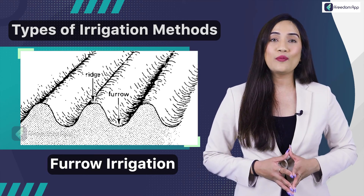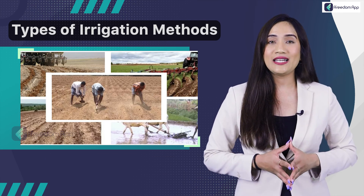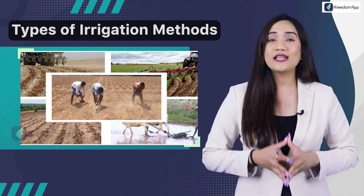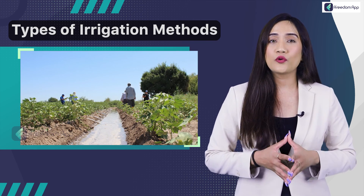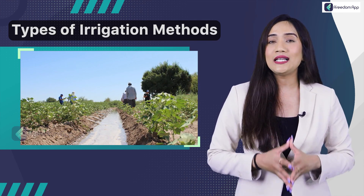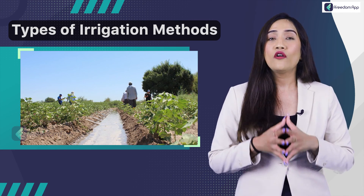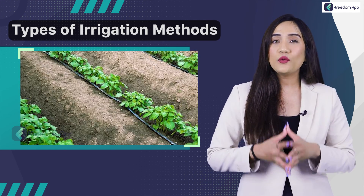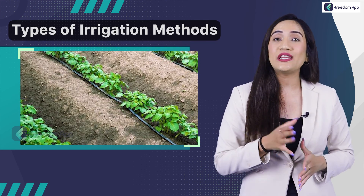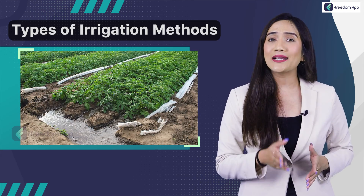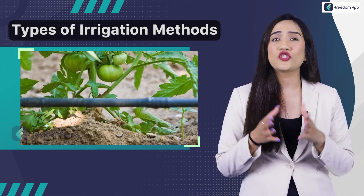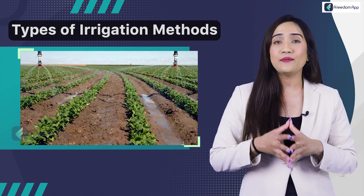In the furrow irrigation technique, trenches or furrows are dug between crop rows in a field. Farmers flow water down the furrows, often using only gravity, and it seeps vertically and horizontally to refill the soil reservoir. Flow to each furrow is individually controlled. The furrow technique is suitable for row crops and tree crops, and because water does not directly contact the plants, crops that would be damaged by direct water contact — such as tomatoes, vegetables, potatoes, and beans — can be irrigated safely.